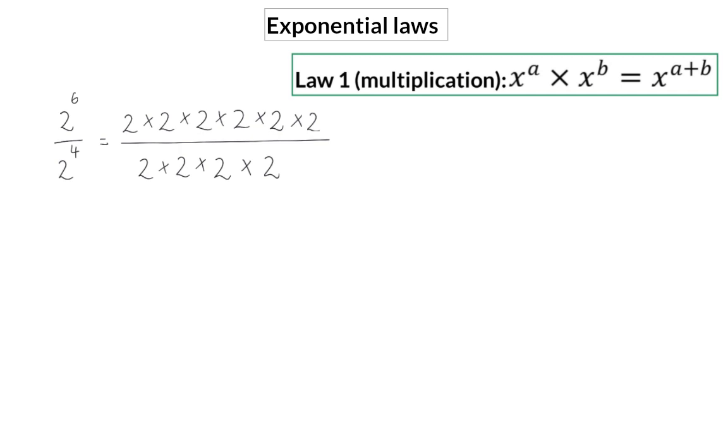A fraction can be simplified by dividing the numerator and denominator by the same value. So here we can say 2 divided by 2 is 1, and repeat that for a second pair, a third pair, and a fourth pair of twos. This means here we are left with 1 times 2 times 2, which we can rewrite in exponential form as 2 squared, because two twos are being multiplied.